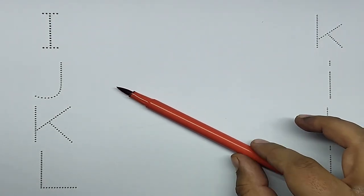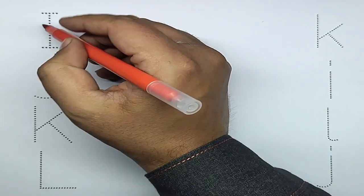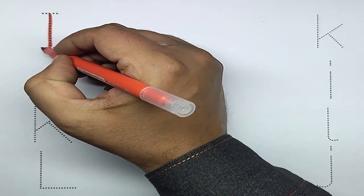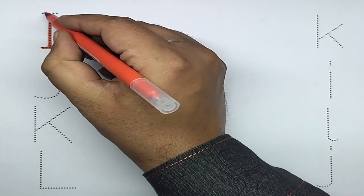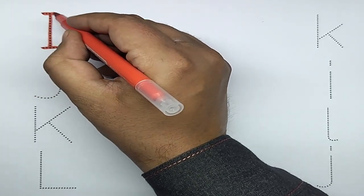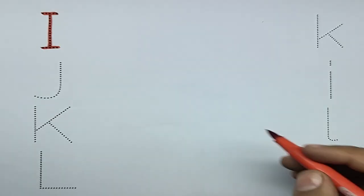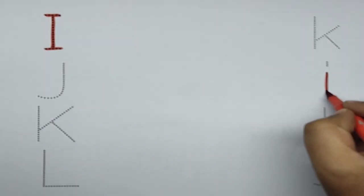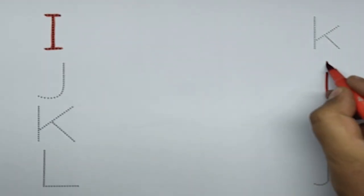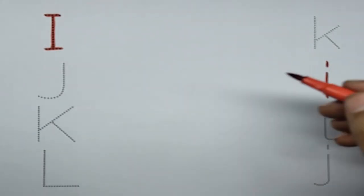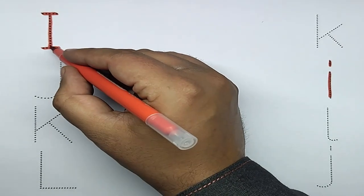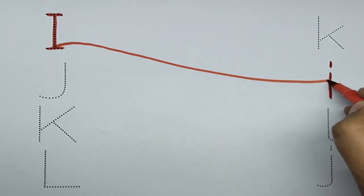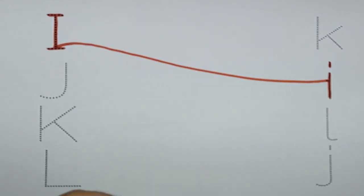Orange color. Capital I, I for input. Small i, I for input. Let's match I.